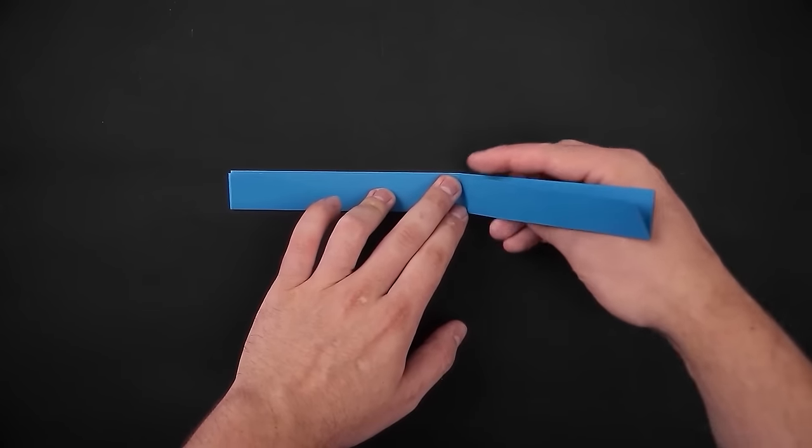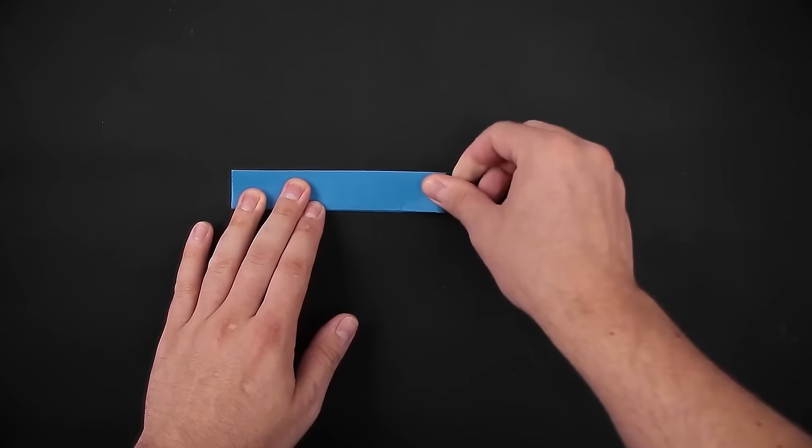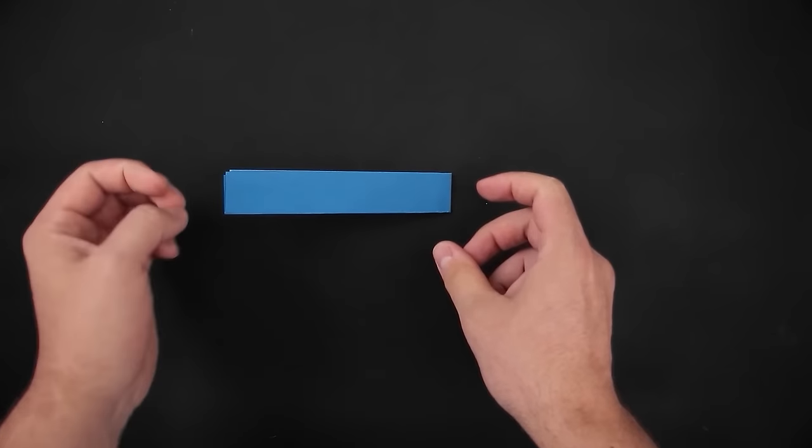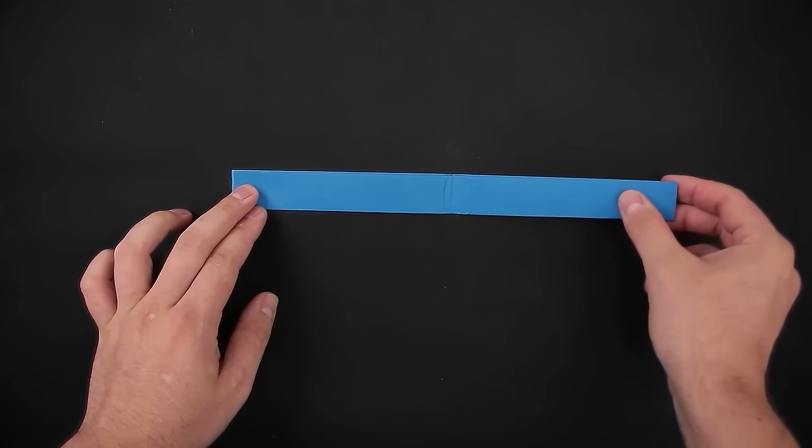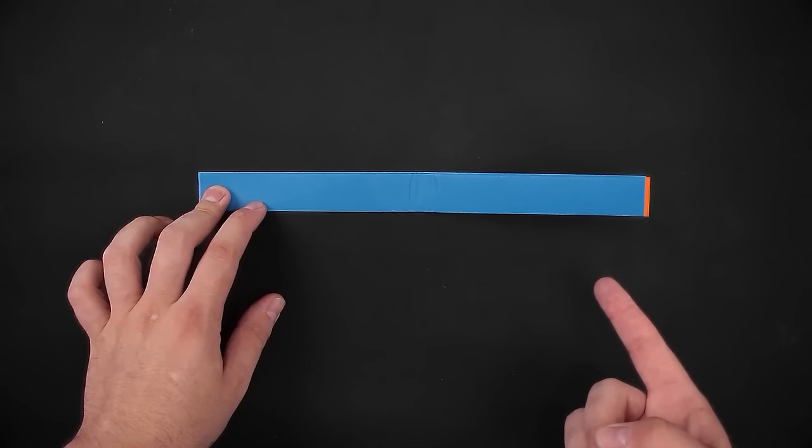So just bring the right side to the left, press the middle, and unfold. Now on the right side we're going to fold the edge to the middle mark, marking a quarter of the length.